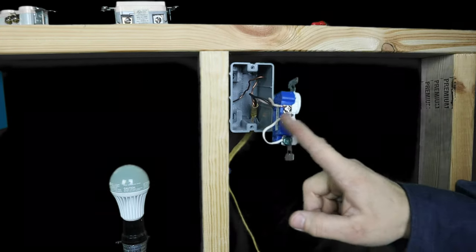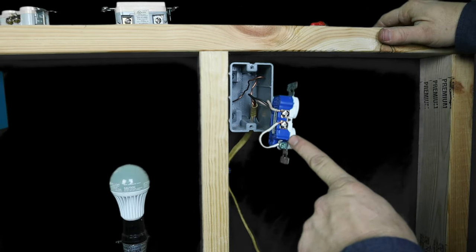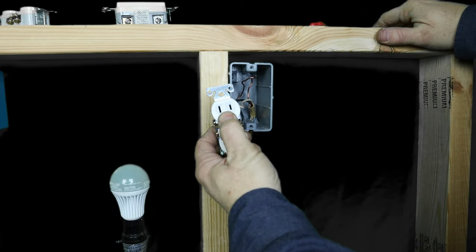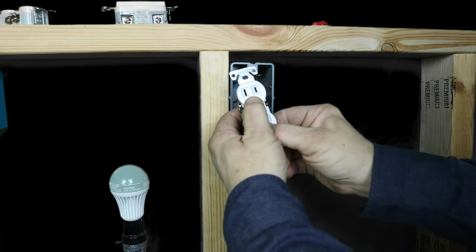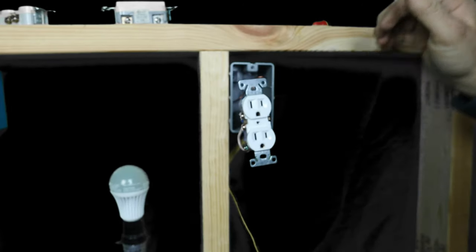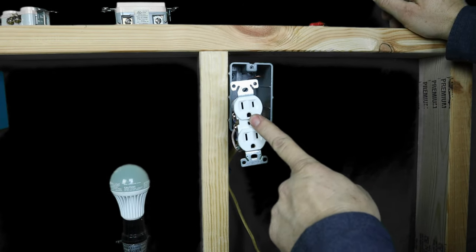The way to correctly fix this is to put a GFI in here, or another two-prong receptacle would look just like this with no grounds. You can put that back just as easy as you could, but you cannot, you cannot do this.